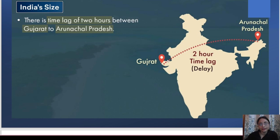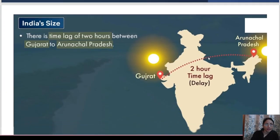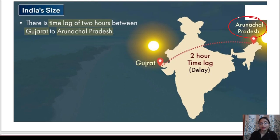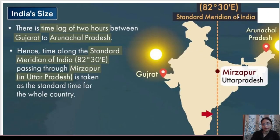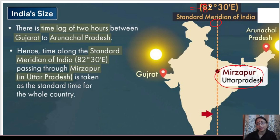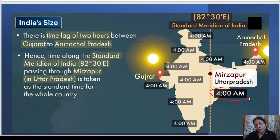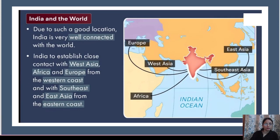Gujarat and Arunachal Pradesh have a time lag of two hours because of India's east-west extent. The sun rises in Arunachal Pradesh earlier than in Gujarat. To maintain uniform time across the country, India follows the Standard Meridian, which passes through Mirzapur in Uttar Pradesh at 82°30' East. This is used as the standard time for the whole country — so all places in India share the same official time.